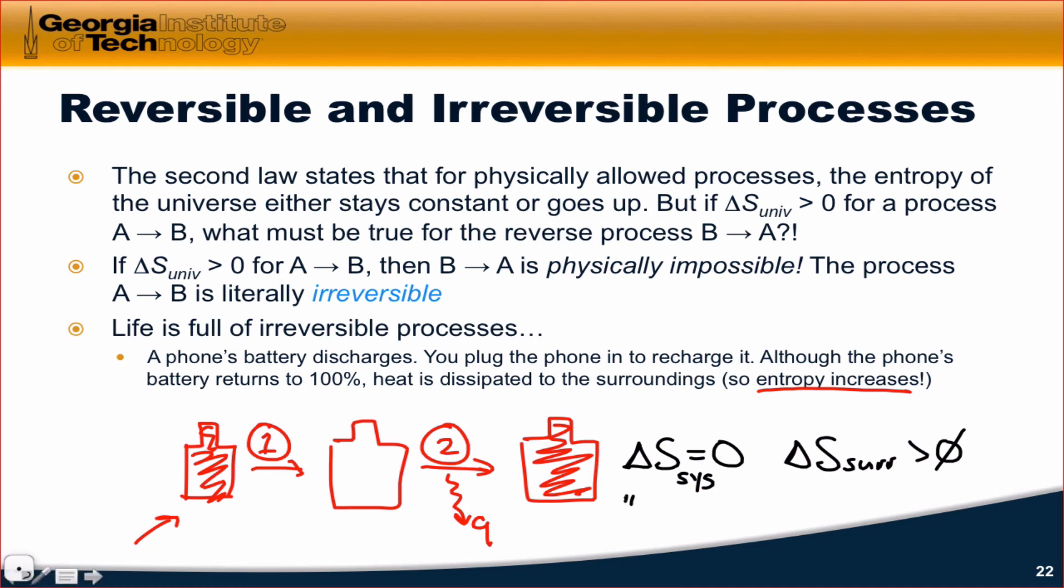dS or delta S is greater than zero. You'll sometimes hear this referred to as a heat tax, the idea that even for cyclic processes within a system, the surroundings or the universe kind of takes a heat tax from the process. It takes a cut of the work we put in to engage in a cyclic process.